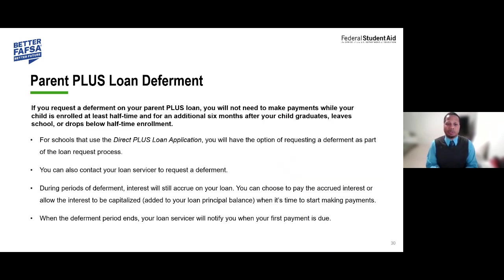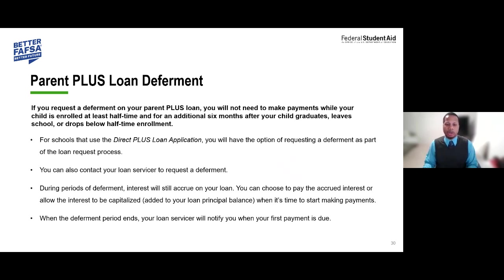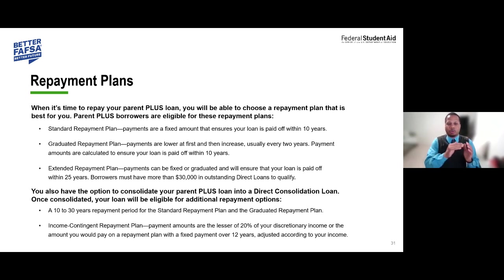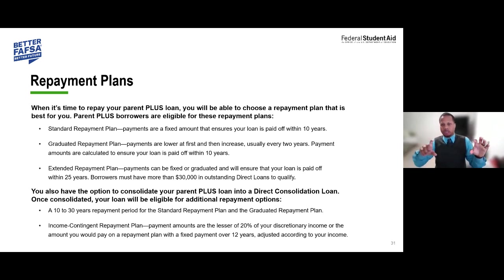There are several repayment plans for the Parent PLUS loan: Standard repayment is a fixed amount over 10 years. Graduated repayment starts low and increases over time, usually every two years, calculated over 10 years. Extended repayment extends the period from 10 to 25 years, but you must have more than $30,000 in outstanding direct loans to qualify. You can also consolidate your Direct PLUS loans into a Direct Consolidation Loan.